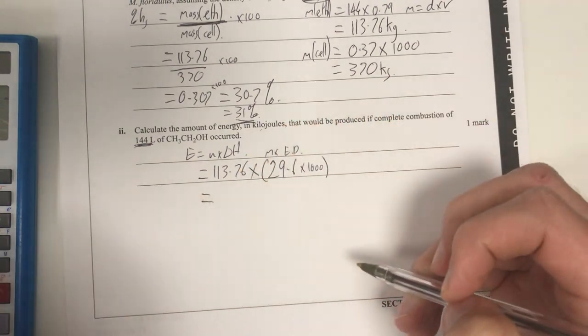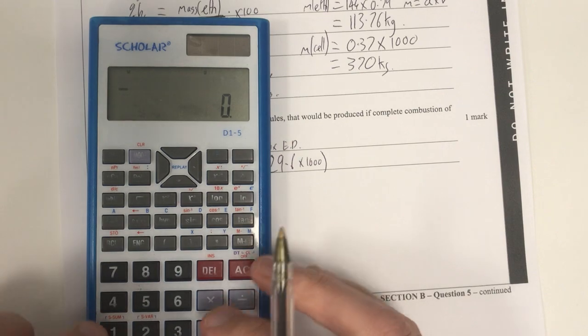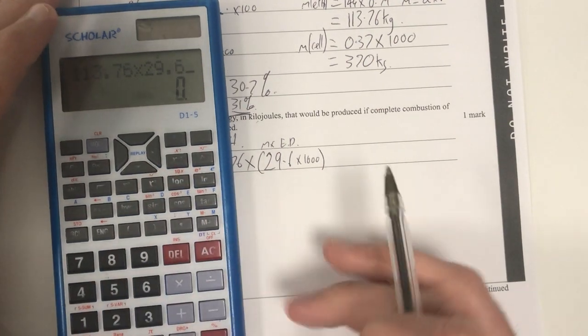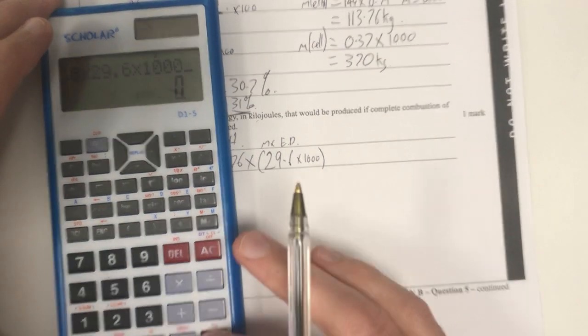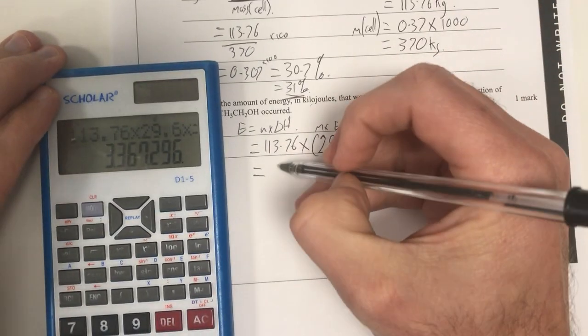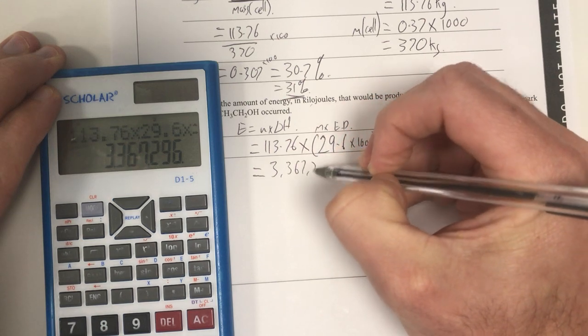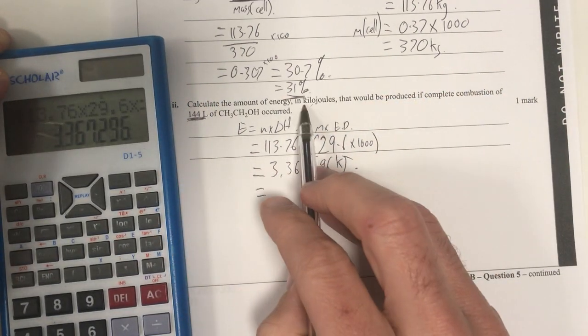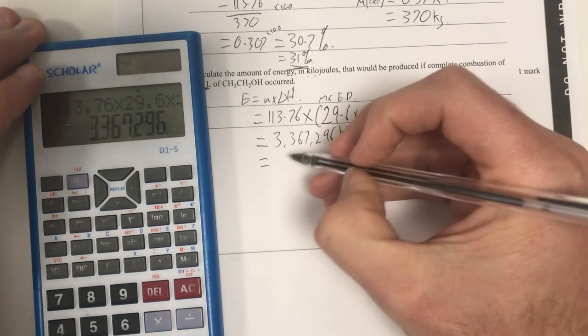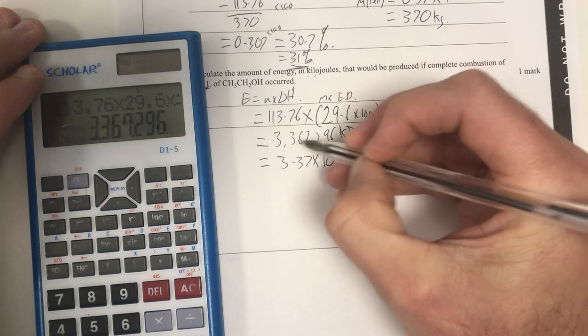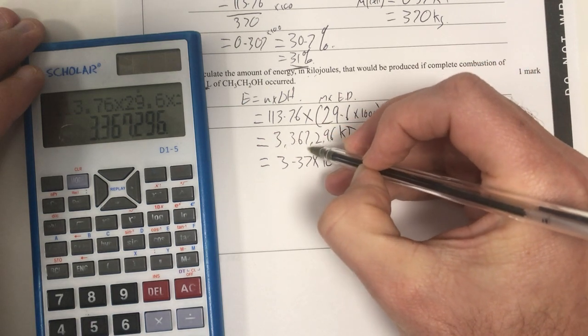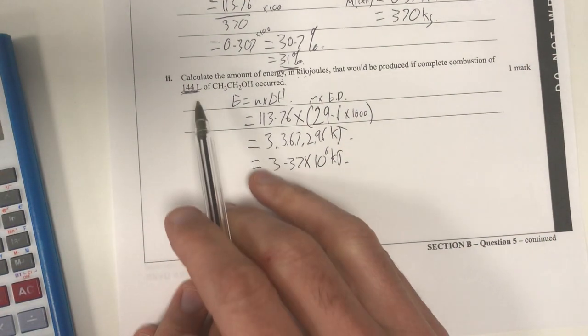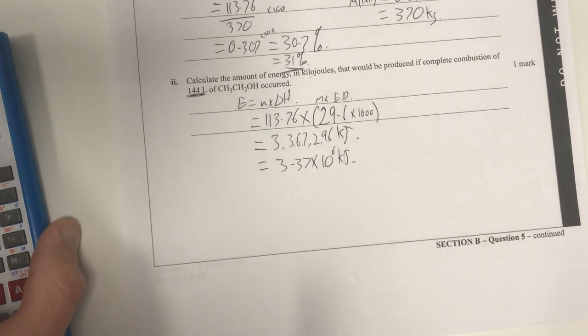So if it's 29.6 kilojoules per gram, I can times that by 1000 to get to my kilojoules per kilogram, because I've got kilograms here, so I need to make sure my units match up. So 113.76 times by my 29.6 times by 1000. And that's going to give me a whole lot of kilojoules. So it's going to be 3,367,296 kilojoules. So that's going to be equal to 3.37 times 10 to the power of 6 kilojoules. And there should be my energy produced from this much ethanol, I believe.